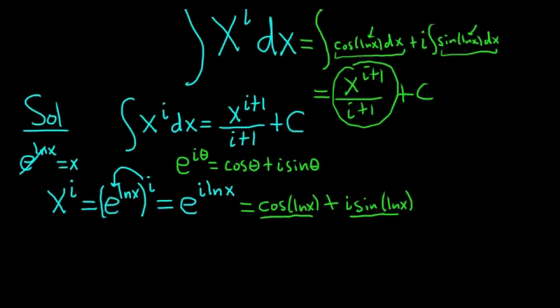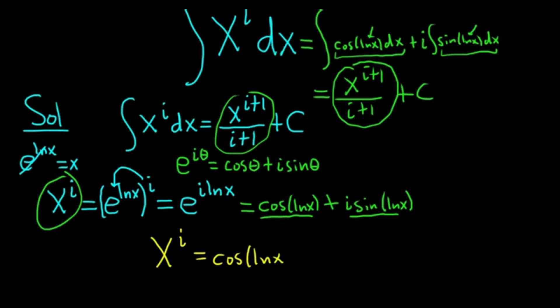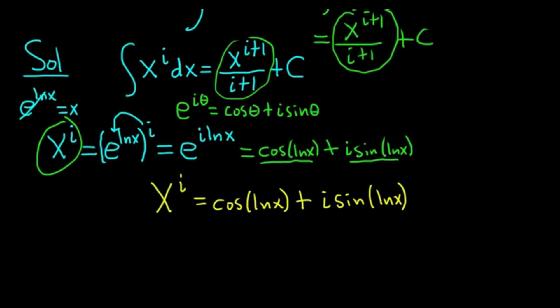So now let's take our x to the i and make it look like this. Let me go ahead and rewrite everything just for clarity. So we have x to the i equals cosine ln x plus i sine ln x.